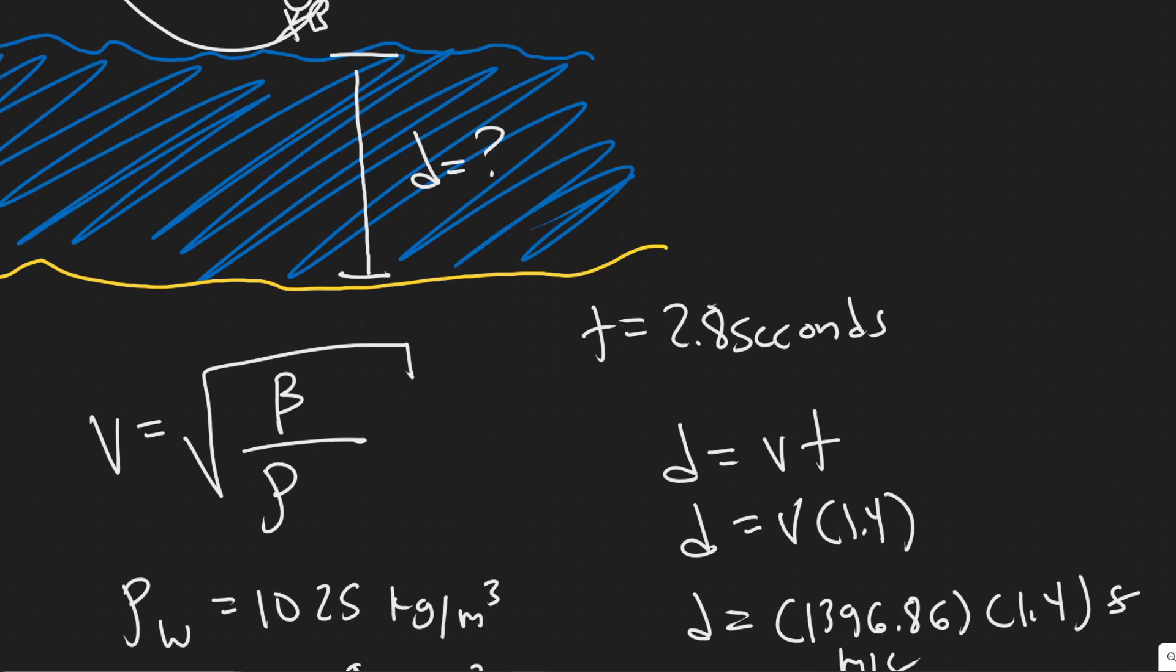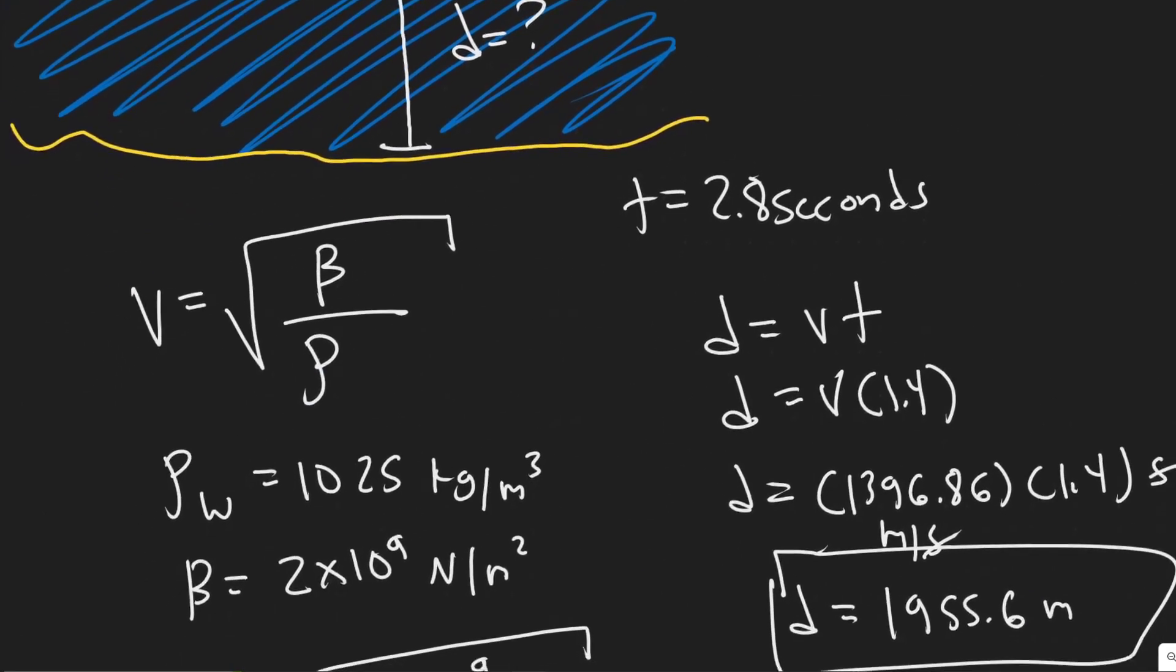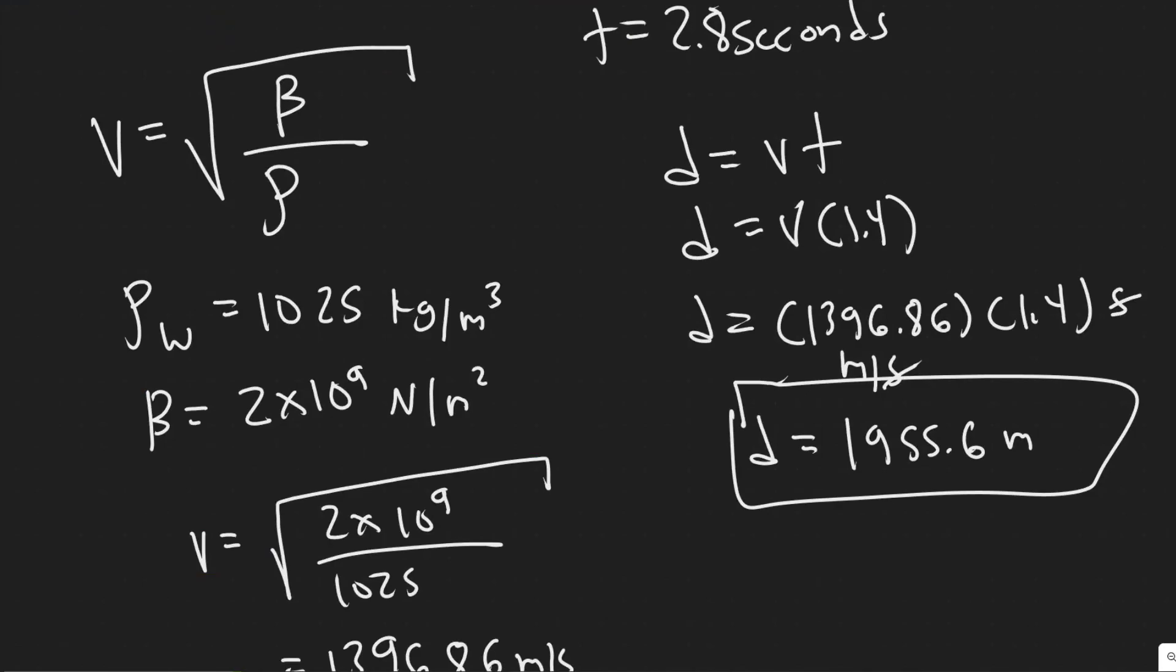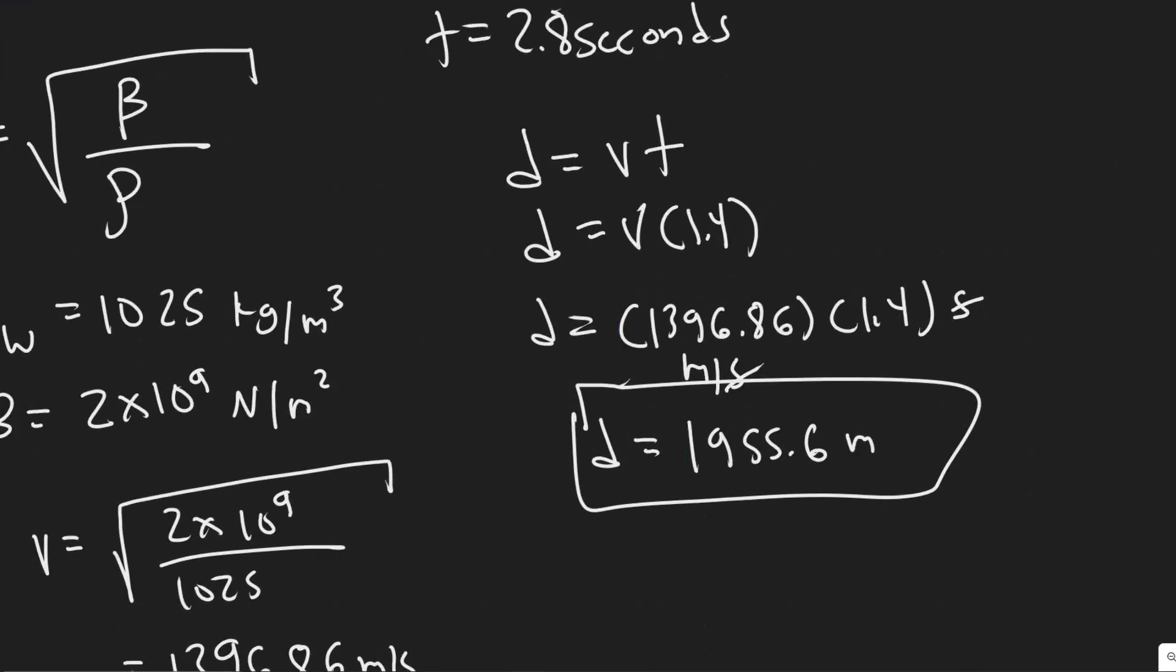We know the velocity of sound in water is equal to the square root of the bulk modulus for water divided by the density of water, which are both of these values. So you just plug it in, you get the velocity. And then with the velocity, you just multiply how long it travels for, and that gives you your distance.